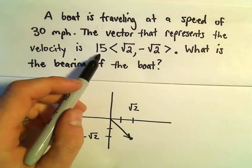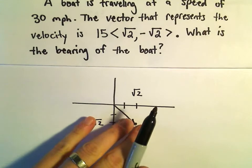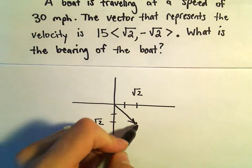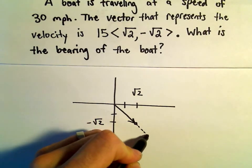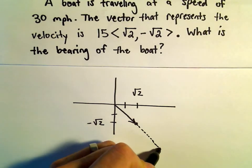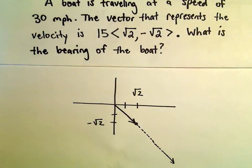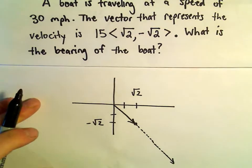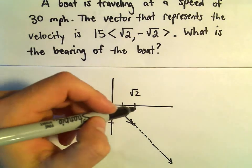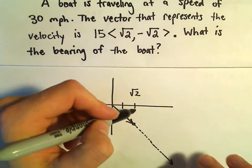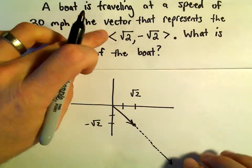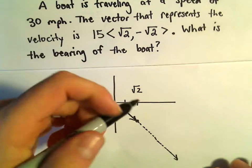Remember geometrically, if you multiply a vector by a real number, if it's a positive real number, all that does is it stretches the vector out, but it still stays pointing in that exact same direction. So to make the arithmetic a little bit easy here, I'm just going to work with the original vector that has components root 2 negative root 2.